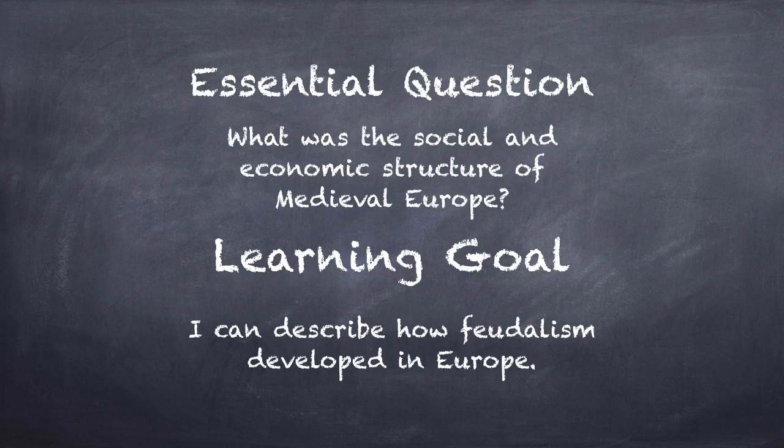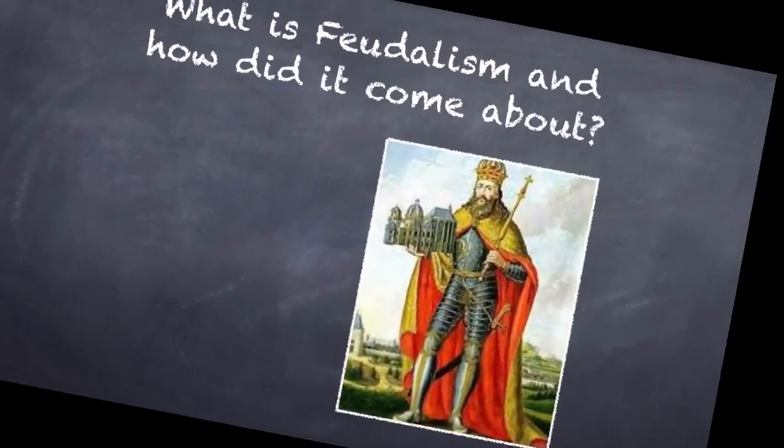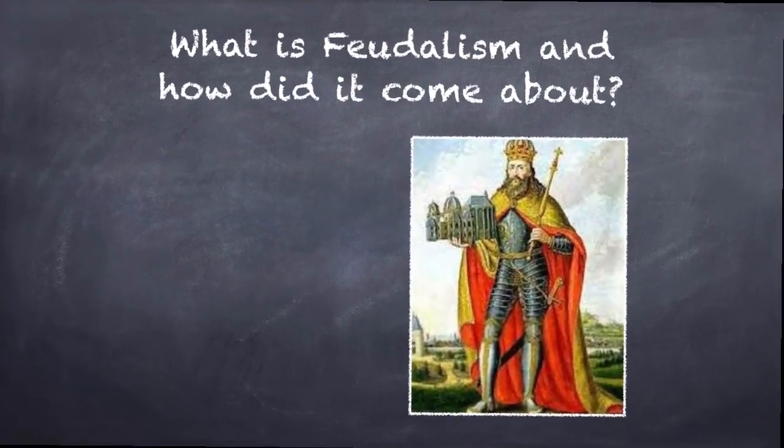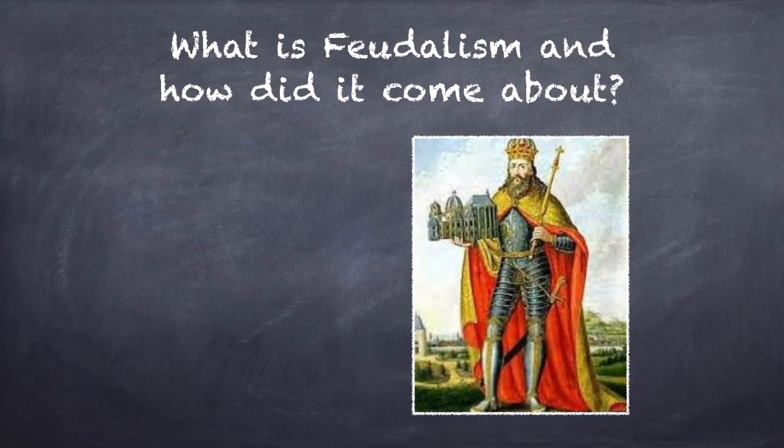As we go through the lesson today, keep in mind that by the end of the lesson you should be able to describe how feudalism developed in Europe, and you should also understand how that relates to the social and economic structure of medieval Europe. That structure was called feudalism. Today we're going to look at what is feudalism and how did it come about?